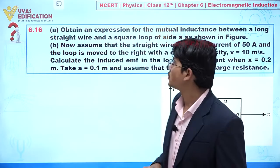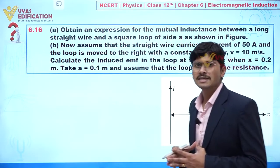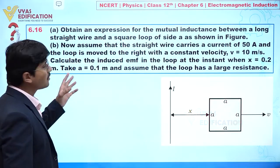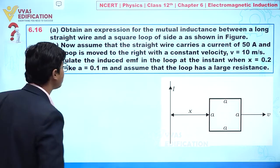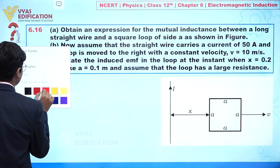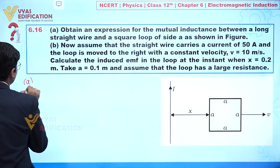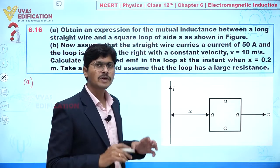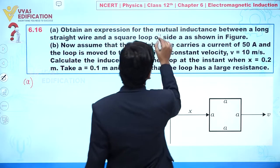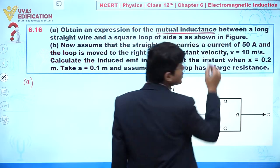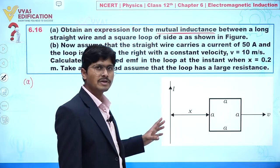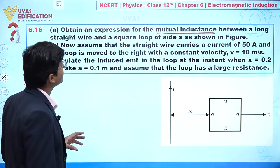We are going to discuss question number 6.16. First we will discuss part number A. In this question, we have to obtain an expression for mutual inductance between a long straight wire and a square loop of side 'a' as shown in the figure.